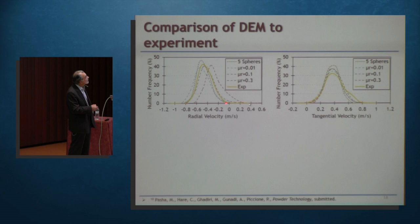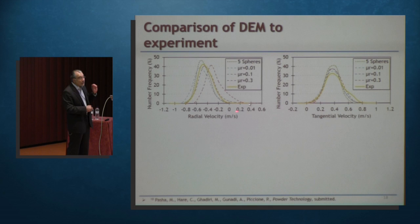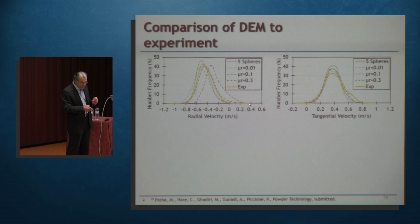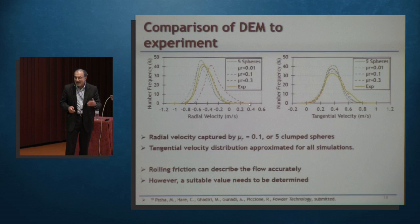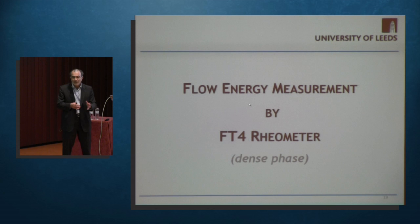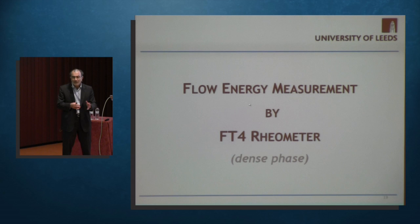Tangential velocity doesn't show much differentiation as particles move as plug flow. Radial velocity is what is actually responsible for renewing the surface, and you get good agreement with clumped spheres and also with rolling friction of 0.1. So radial velocity is nicely captured by rolling friction of 0.1 or five clumped spheres. The conclusion here is that rolling friction can do the job, but a suitable value needs to be determined experimentally — the approach is empirical rather than predictive — whilst with clumped spheres you can produce realistic results without any parameter changes.